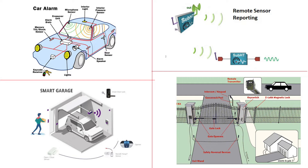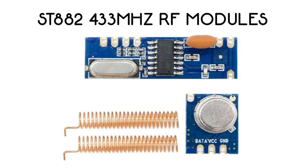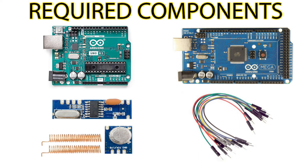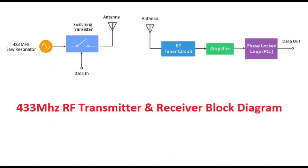We have a wireless module for our demonstration. We are using two Arduino boards — an Arduino 2560 board with a transmitter, and another board for the receiver. We are using the SDW-I2 and RF module for this hardware setup.